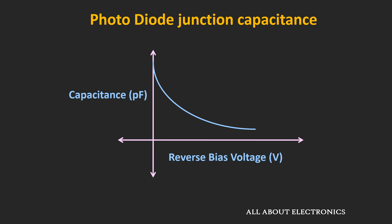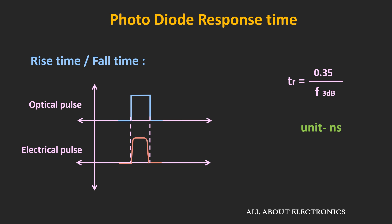The junction capacitance also reduces with increasing applied reverse bias voltage. As the reverse bias voltage increases, the depletion region gets wider, and due to that, the junction capacitance will reduce. While selecting a photodiode for fast switching applications, one should look for these parameters.